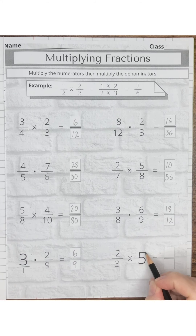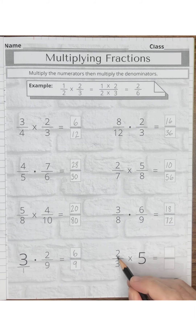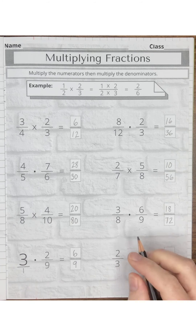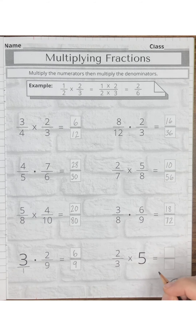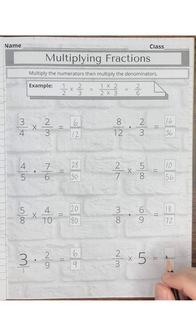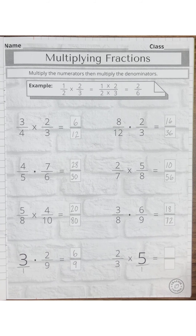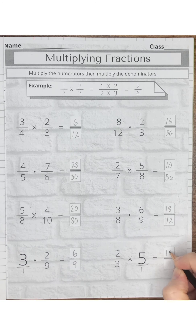Again we have a whole number: two-thirds times 5. A fraction is just a division problem — two divided by 3. To turn 5 into a fraction, we write 5 over 1. If you divide 5 by 1 you get 5. So now we multiply: 2 times 5 is 10, and 3 times 1 is 3.